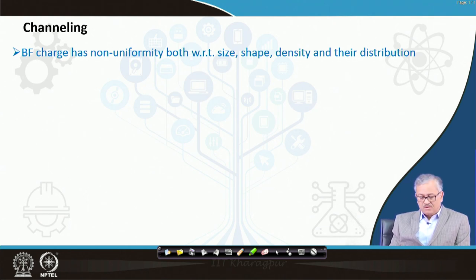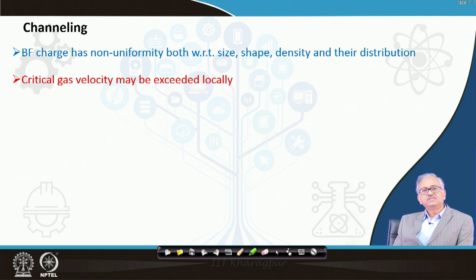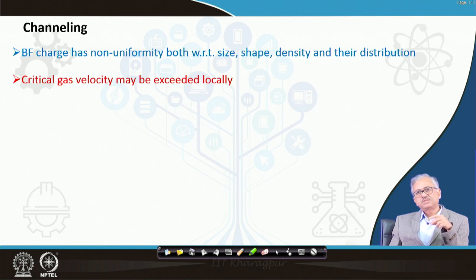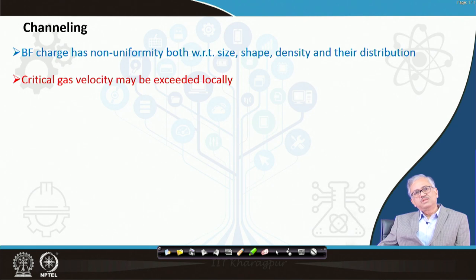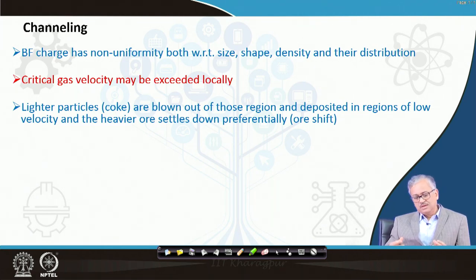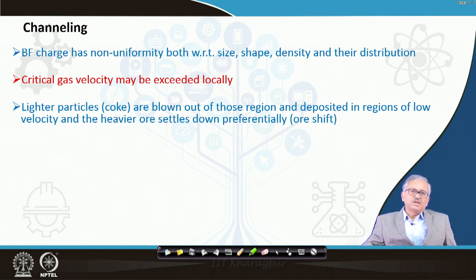The critical gas velocity may be exceeded locally, because there may be regions where fines are present. Where fines exist, resistance to gas flow is very high and pressure drop is very high. If you keep increasing the blast velocity, a time may come when the critical velocity is exceeded locally for those fine particles. Then lighter particles — coke fines — are blown off from that region, since coke is very light and prone to fluidization.